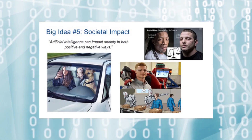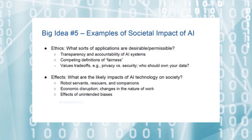The fifth big idea is societal impact. Artificial intelligence can impact society in both positive and negative ways. Consider the example of autonomous vehicles. Self-driving cars will provide mobility to many people who cannot drive themselves, and self-driving trucks will lead to new efficiencies in the transportation industry. But people who make their living from driving will lose their jobs. The ethical application of artificial intelligence technologies is receiving a lot of attention today, and this is also part of big idea number five. When artificial intelligence is used to make decisions about people — such as who gets a mortgage or who gets a job interview — it's important to assure that this decision-making process is transparent and does not contain unwarranted biases against particular groups of people.